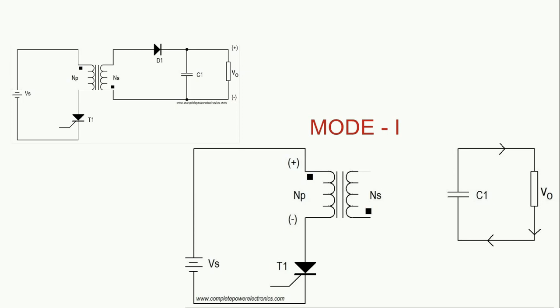And you can see this one, the diode D is in reverse bias at this moment, when switch is in on condition.